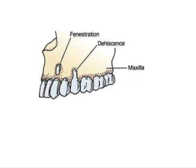The two terminologies that help you understand this loss of bone are fenestration and dehiscence. Fenestration is a window-shaped defect where the marginal bone remains intact — it is a discontinuity defect, meaning it does not continuously follow the contour of the bone. Dehiscence, on the other hand, is a continuous defect that includes the marginal bone around the tooth and does not have a window like fenestration.